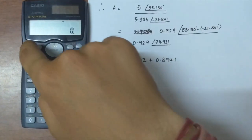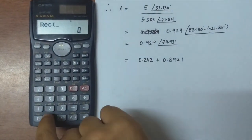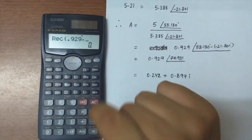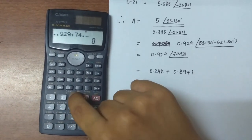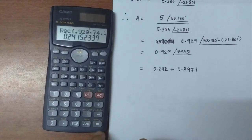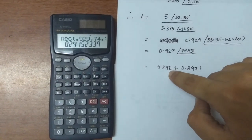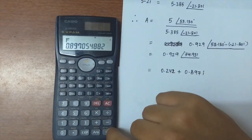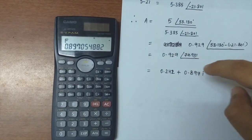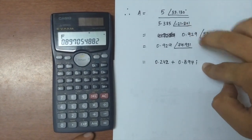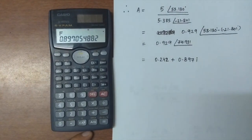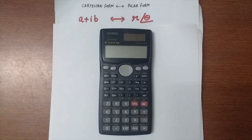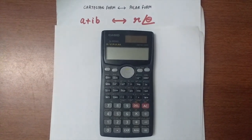Press Shift, then minus. Enter r=0.929, a comma, then θ=74.931, close the bracket, press equal-to. This gives the value of a in a+ib as 0.2415, approximated to 0.242. Then press Alpha, tan, equal-to — this gives b=0.897. So the Cartesian form of the answer is 0.242+0.897i, and the polar form is 0.929∠74.931°. If you like the video, please hit the like button and subscribe to our channel. Thanks for watching!